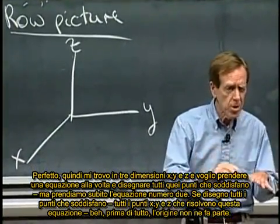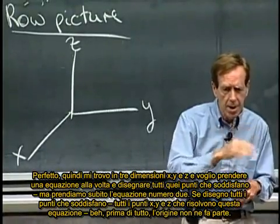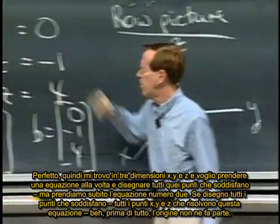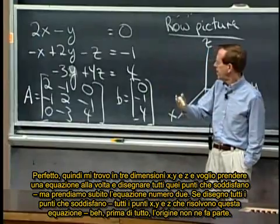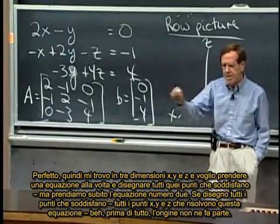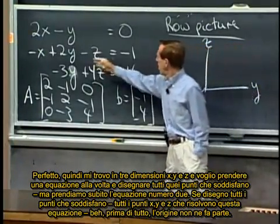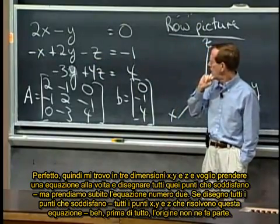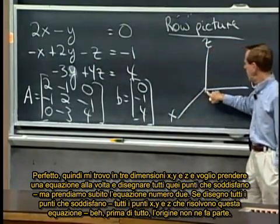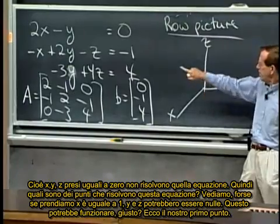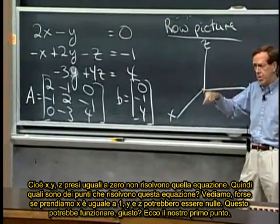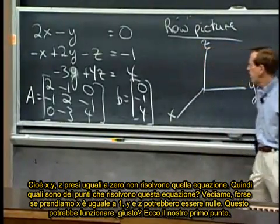And I want to take those equations one at a time and make a picture of all the points that satisfy, let's take equation number two. If I make a picture of all the points that satisfy, all the x, y, z points that solve this equation. Well, first of all, the origin is not one of them. x, y, z being zero, zero, zero would not solve that equation.